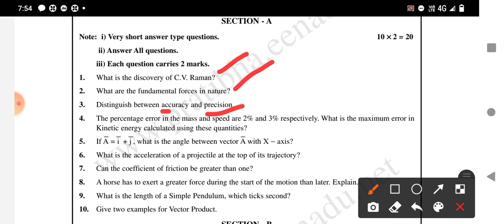The percentage error in mass and speed are 2% and 3% respectively. What is the maximum error in kinetic energy? You need to calculate that.